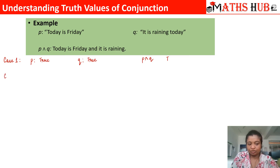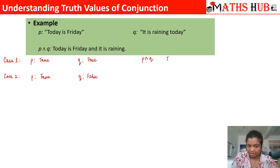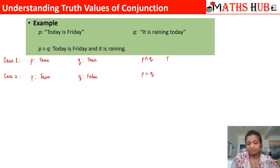Case 2: p is true but q is false — today is Friday but it is not raining today. When I evaluate the argument 'it is Friday and it is raining,' I get a false answer because statement q is false.